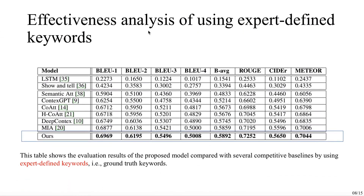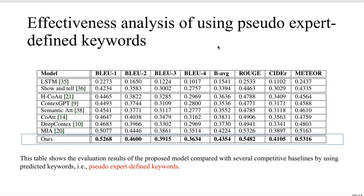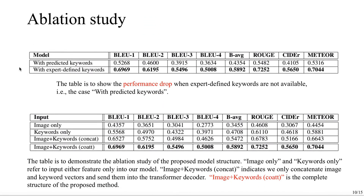This is the first ablation analysis of using expert-defined keywords. The proposed method performs the best. In some scenarios, such as in chemistry, expert keywords may not exist commonly. In this case, we can use our method to generate some pseudo-expert-defined keywords to help improve model performance and also improve interpretability. In this case, our model still performs the best. When we compare the model with pseudo-expert-defined keywords and also expert-defined keywords, you can see that there is a performance gap.